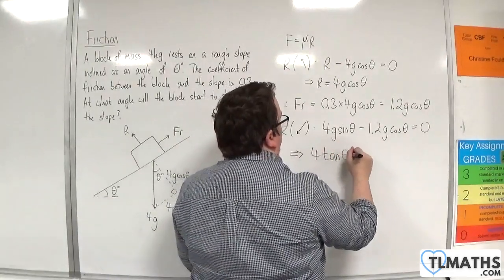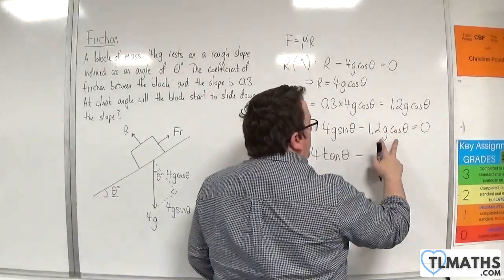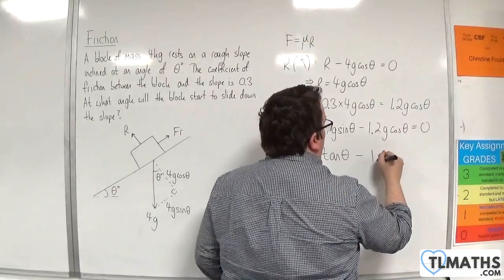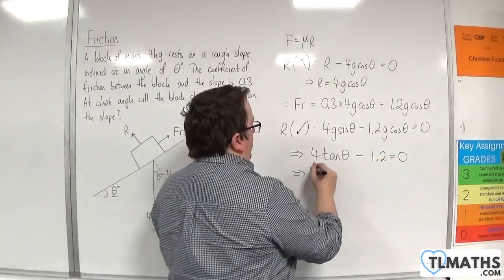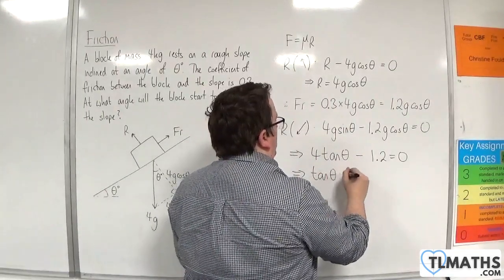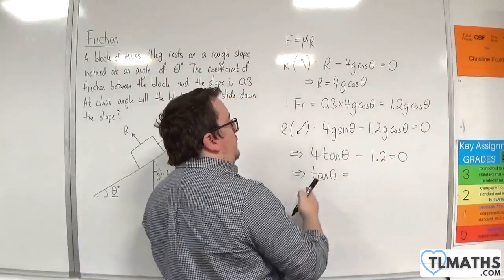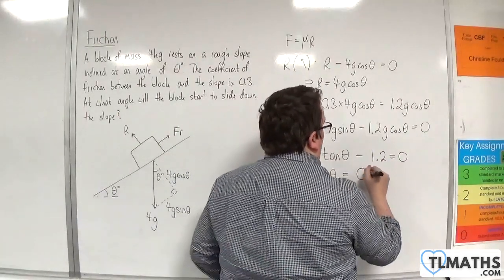So I'll have 4tan theta. And here, if I divide this by g cosine theta, I'm just going to be left with 1.2. So tan theta must be equal to 1.2 divided by 4, which is 0.3.